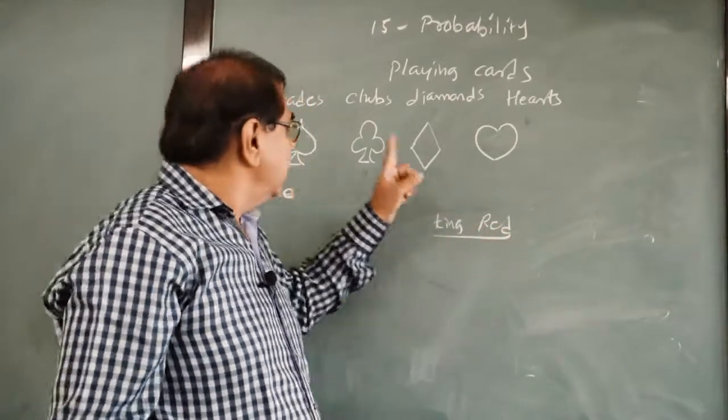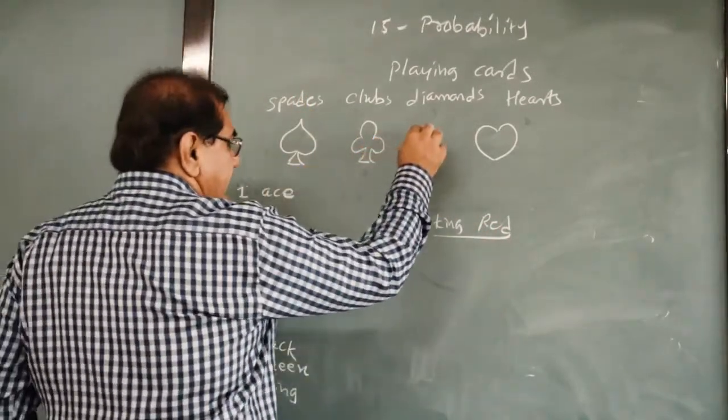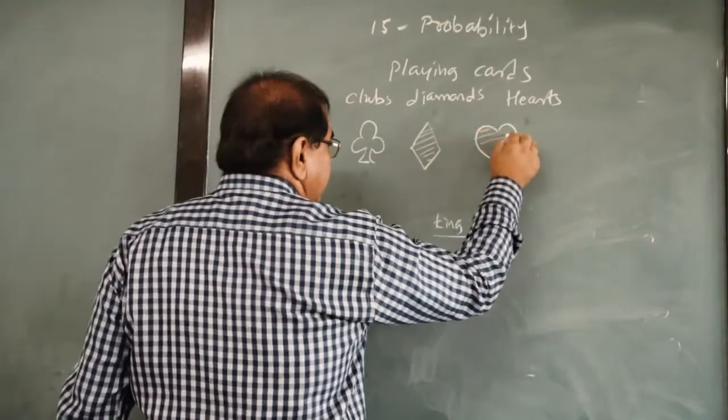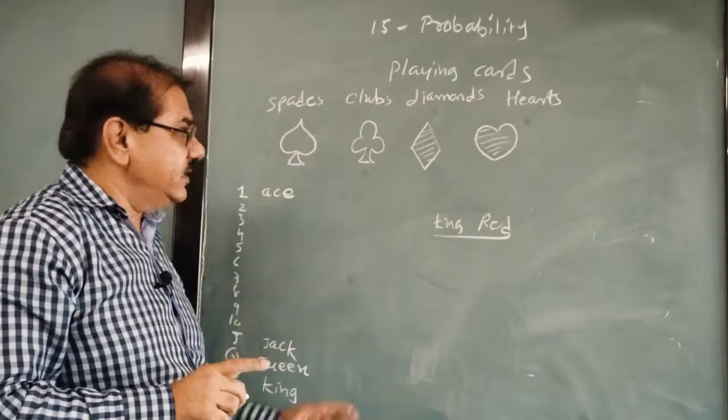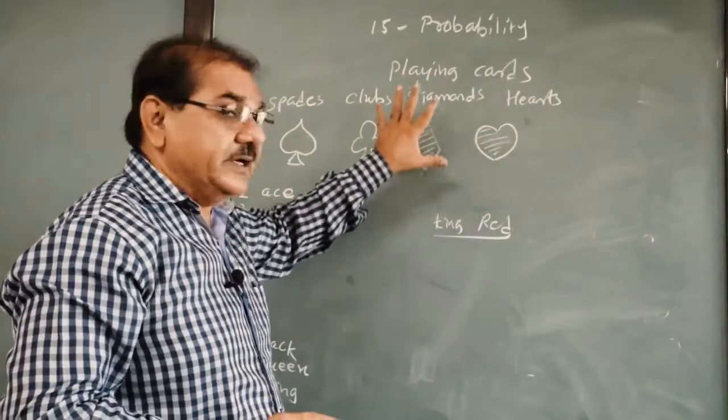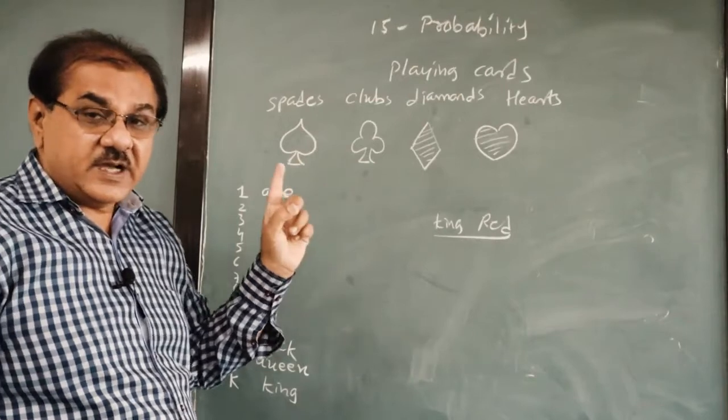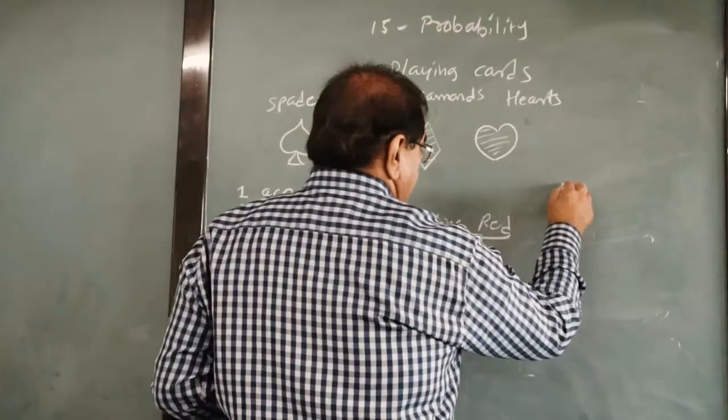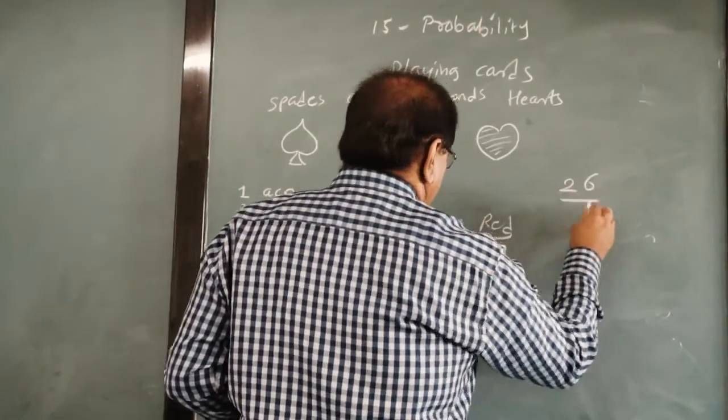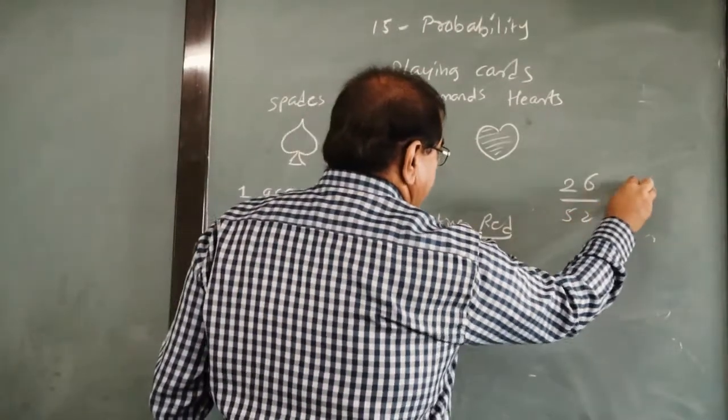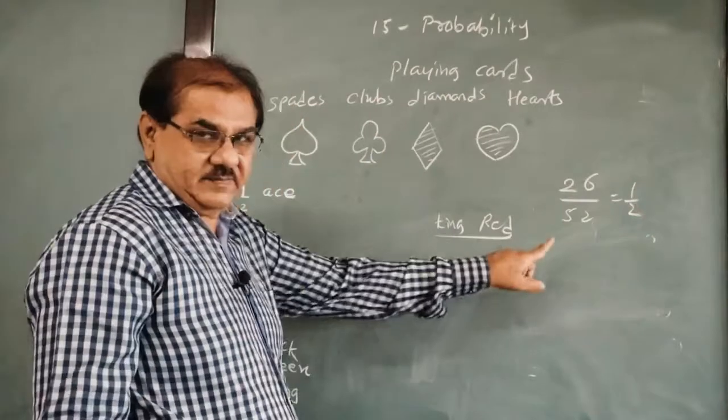Remember, king of red color. Red is not this type of card. Actually you can say this diamond is also red in color and hearts, it is also red in color. So totally pages red in color are 13 plus 13, 26. So it is 26 upon total 52, so it is 1 upon 2 probability.